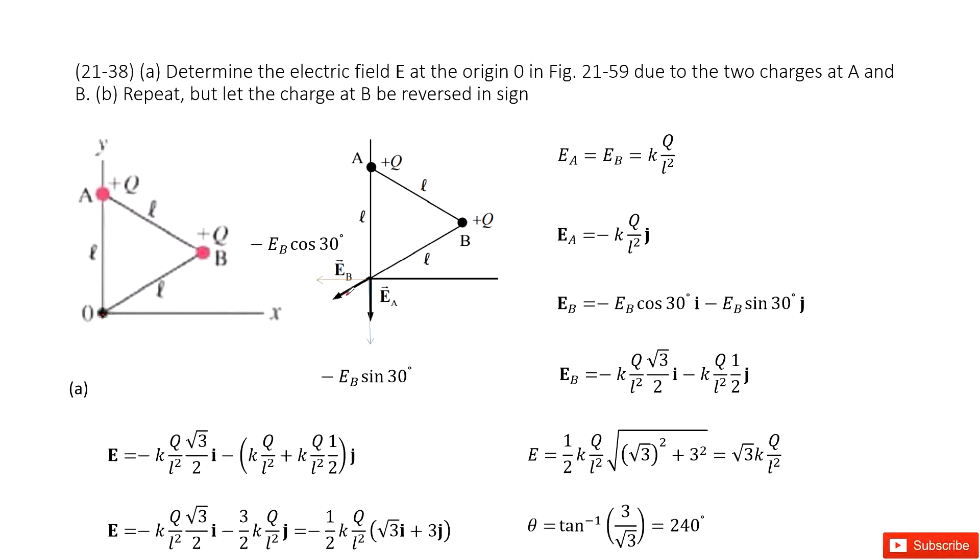So we can draw a picture like this one. First of all, we can see EA, the electric field from particle A. So it is radially outward, pointing to the negative y component. And then we look at particle B. This is still carrying positive charge, so EB is still radially outward, pointing in this direction.